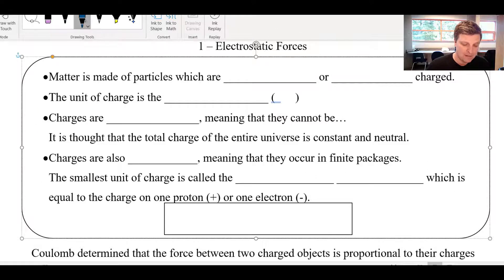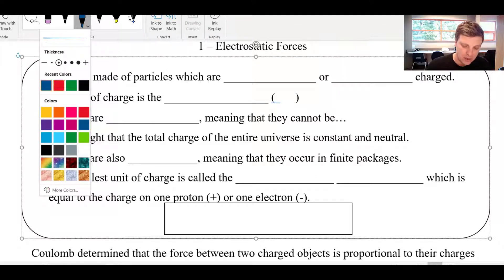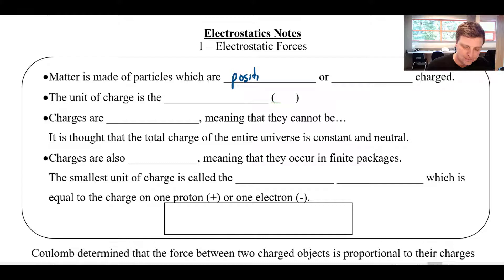The first, which you're probably aware of, is that matter is made of particles which are positively or negatively charged. So atoms are made of protons and neutrons and electrons. The protons and the electrons have charges, plus or minus. The unit of charge is called the Coulomb, which we abbreviate as capital C.